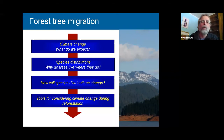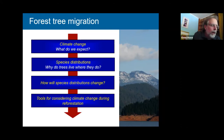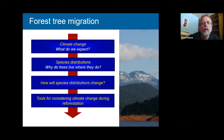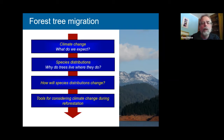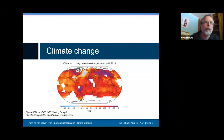Here's an overview of today's talk. I'll start with a brief discussion of climate change as a foundation, then what we expect in relation to forests. Most of the talk will focus on species distributions and the distribution of genetic variation in tree species — first conceptually, why trees live where they do, and then what that means in relation to climate change. I'll also discuss how species distributions might change and provide tools for considering climate change during reforestation.